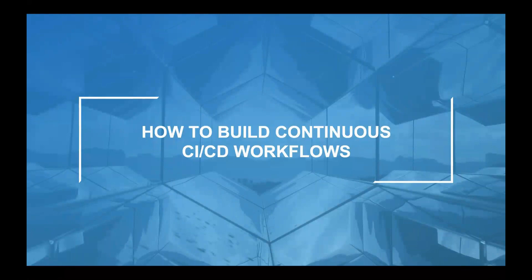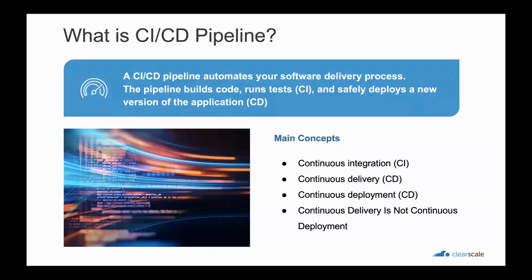Let's talk about CICD workflows. CICD pipelines automate your software delivery process — the pipeline builds code, runs tests, and safely deploys a new version of the application. Continuous integration is a software development practice where developers regularly merge their code changes into a central repository, after which automated builds and tests are run. Continuous delivery is where code changes are automatically built, tested, and prepared for production release. With continuous deployment, revisions are deployed to a production environment automatically without explicit developer approval, making the entire software release process automated.